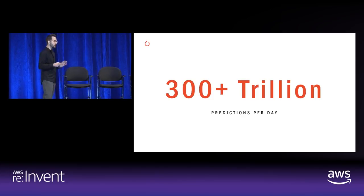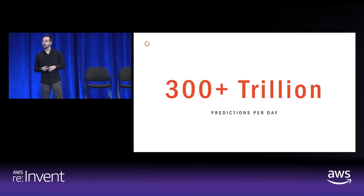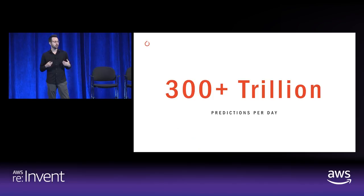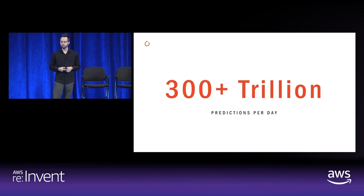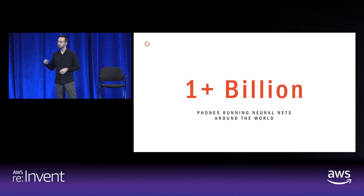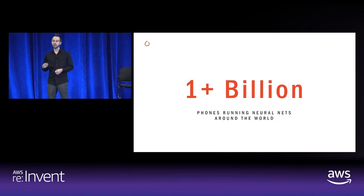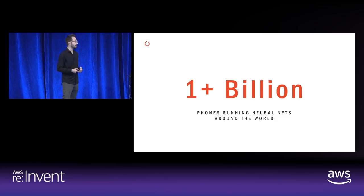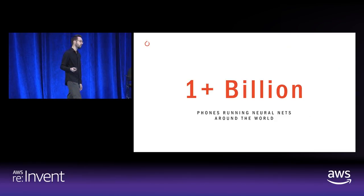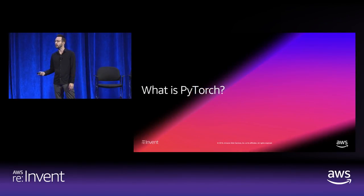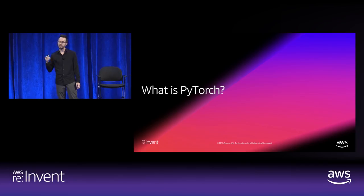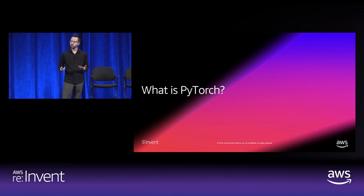We do this at extraordinary scale today. PyTorch is our end-to-end research and production platform performing 300 trillion inference operations per day. This technology is deployed on over a billion mobile devices. Operating at that scale on servers and mobile devices presents unique challenges and requires a fairly unique approach to technology. Our choice for this is PyTorch.